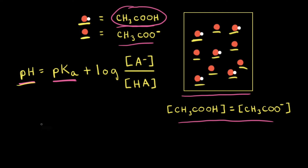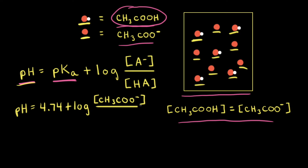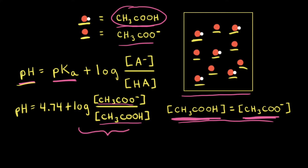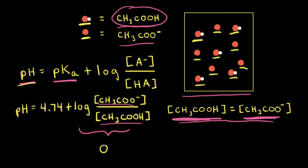So we can go back to the Henderson-Hasselbalch equation and write that the pH is equal to the pKa, which we just calculated to be 4.74, plus the log of the concentration of the conjugate base — the acetate anion, CH3COO⁻ — divided by the concentration of the weak acid, acetic acid, CH3COOH. We've already figured out that the concentration of acetic acid is equal to the concentration of the acetate anion. Therefore, the concentration of the acetate anion divided by the concentration of acetic acid is just equal to 1. The log of 1 is equal to 0, so the pH of the buffer solution is equal to 4.74 plus 0, or just 4.74.